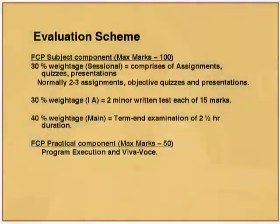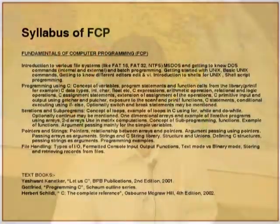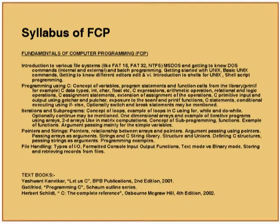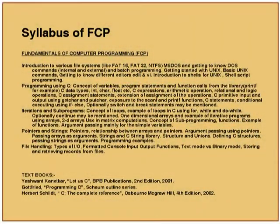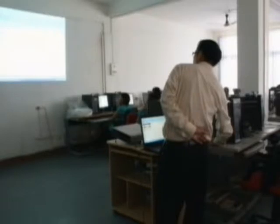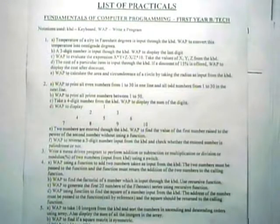The practical component is worth 50 marks. Marks are allotted based on program execution, viva voce, and maintenance of records. This is the syllabus for Fundamentals of Computer Programming. We first start with understanding the Windows and Unix environment, then move straight to programming using C as the language. We cover all aspects including arrays, pointers, strings, and file handling. This is the syllabus as per our university's curriculum detailed project report, and this slide shows a typical list of practicals to be carried out in the labs.